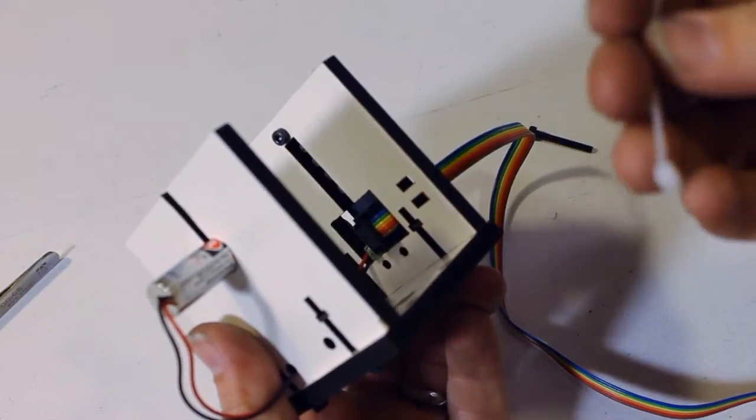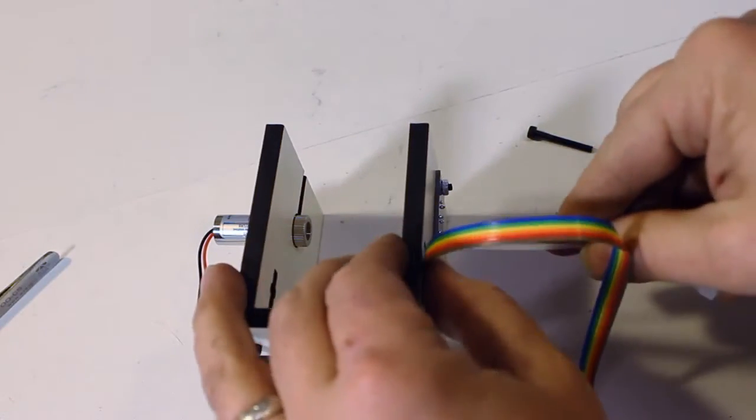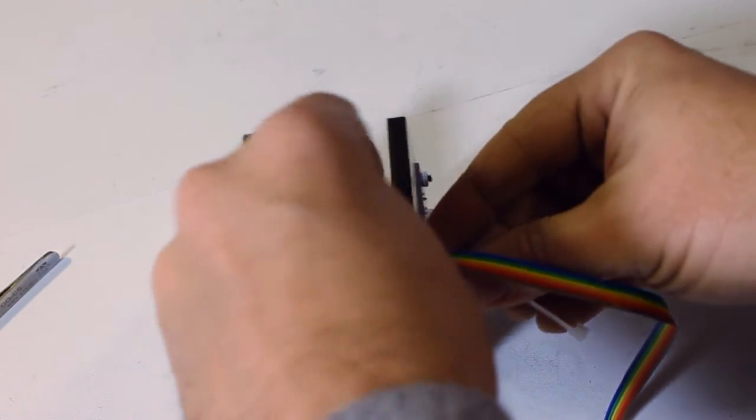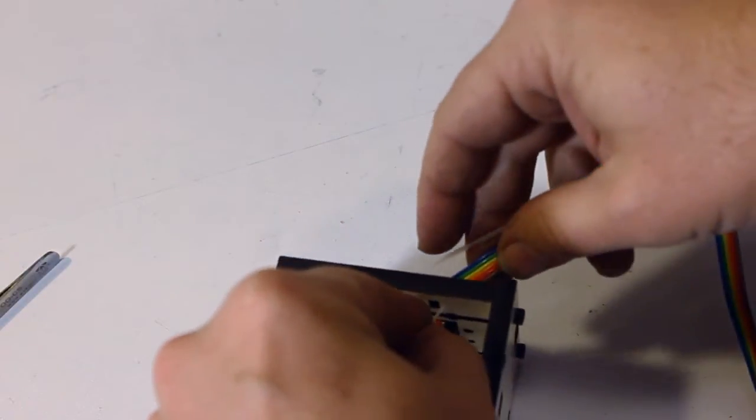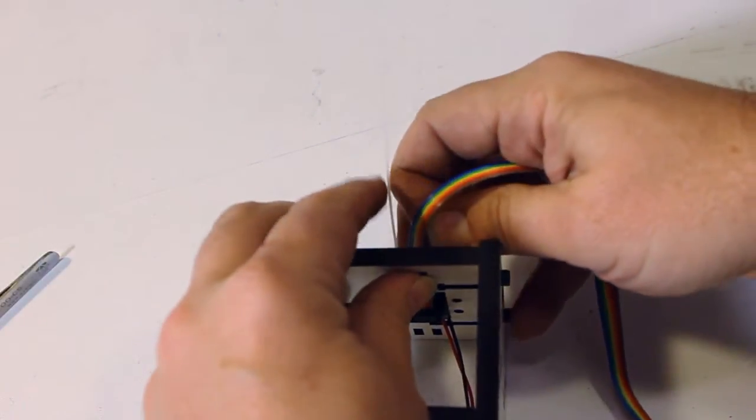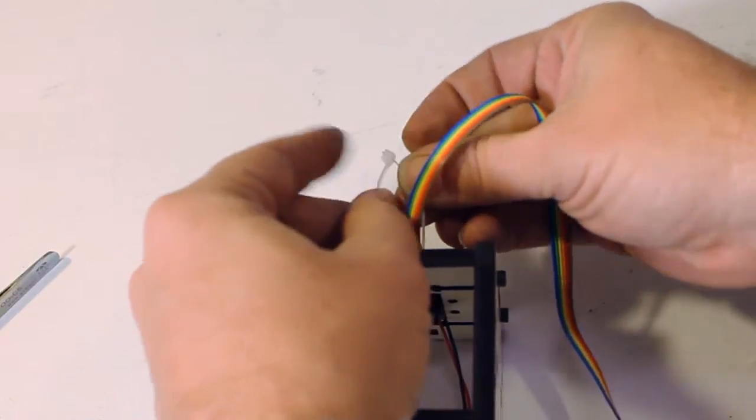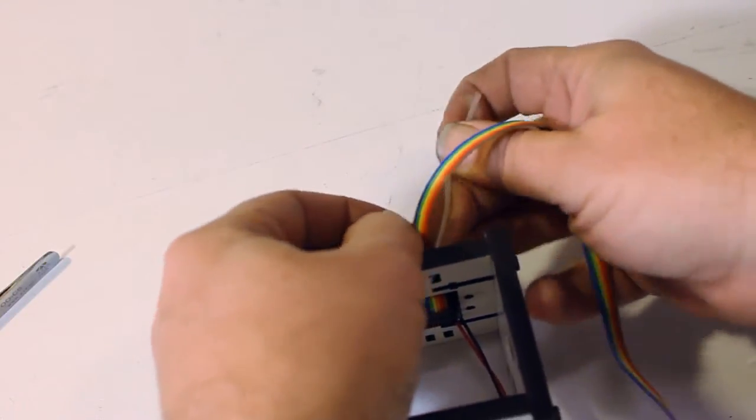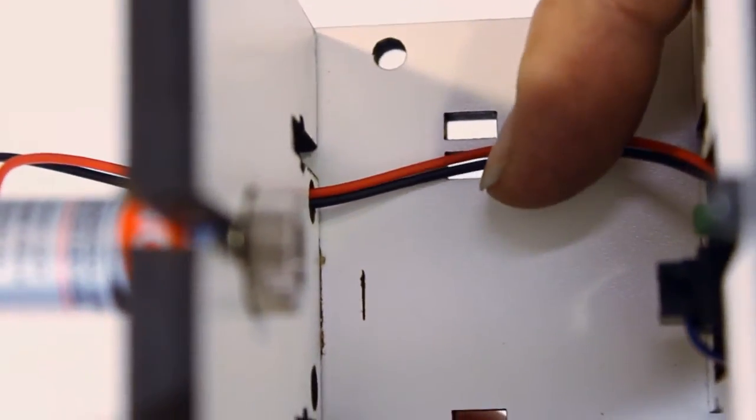There are a couple more zip tie points for managing cable. There's one here for the ribbon cable. You can run the cable to either side, depending on which way it's coming from the winder. And there's another one here for the laser wire.